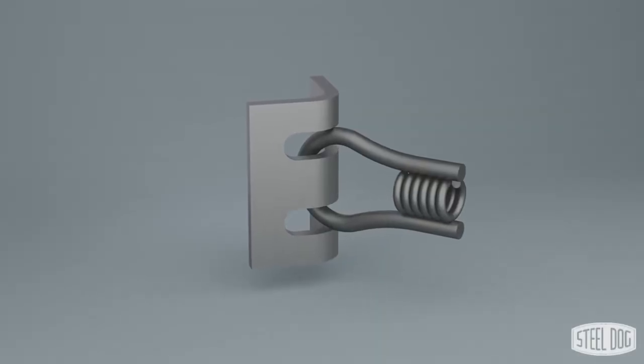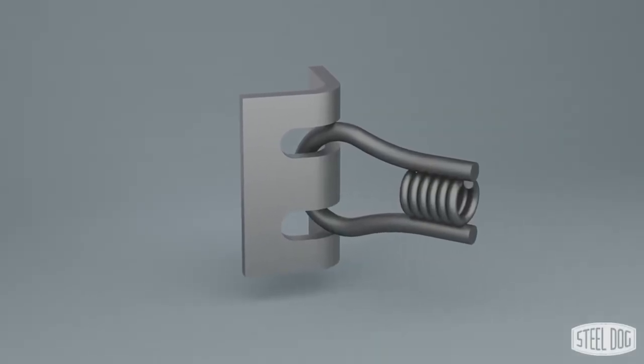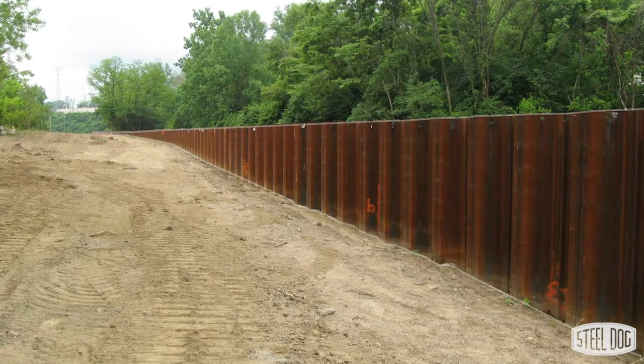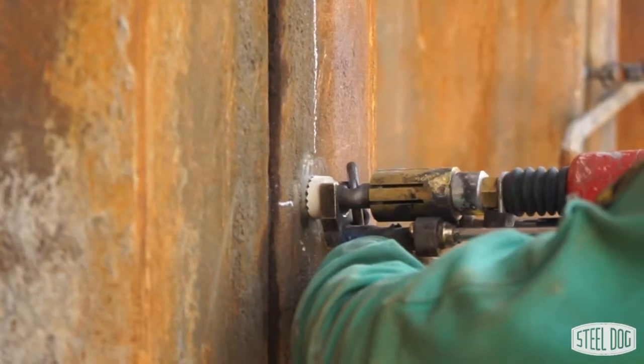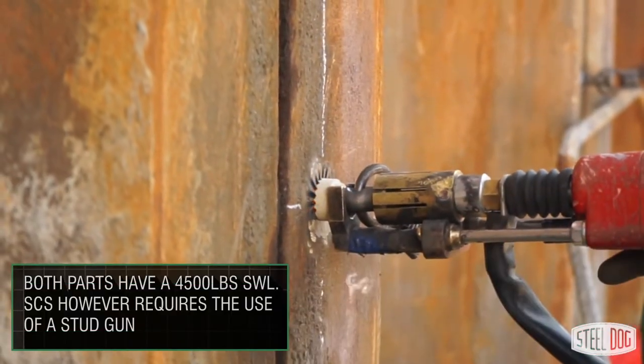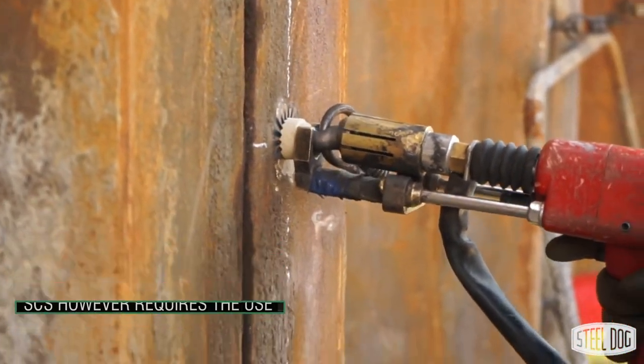The steel dog coil weld angle bracket is a weldable connector used to attach any formwork to steel structures such as sheet piling or H piles. It's a great alternative to the steel dog coil stud for applications where you don't have good access to a stud welding gun.